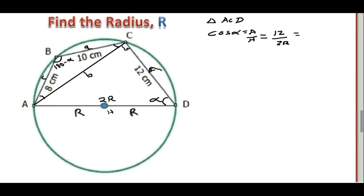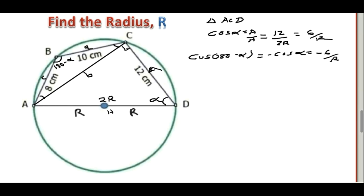2 is a common factor, so dividing 12 by 2 gives 6 over R. Now, because triangle ACD is a right-angle triangle, angle alpha is an acute angle, meaning 180 minus alpha is an obtuse angle. Using the unit circle concept, an obtuse angle is in the second quadrant where cosine is negative. So cos(180 minus alpha) equals negative cos alpha, which is negative 6 over R.